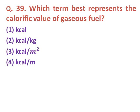Question thirty-nine: Which term best represents the calorific value of gaseous fuel? Option one: kilocalorie. Option two: kilocalorie per kg. Option three: kilocalorie per metre squared. Option four: kilocalorie per metre. The correct answer is option two — kilocalorie per kg.